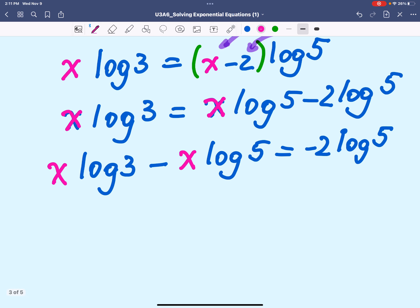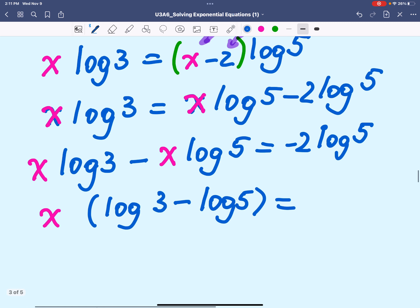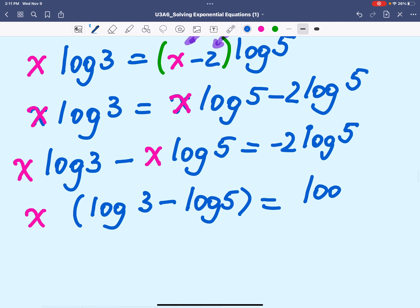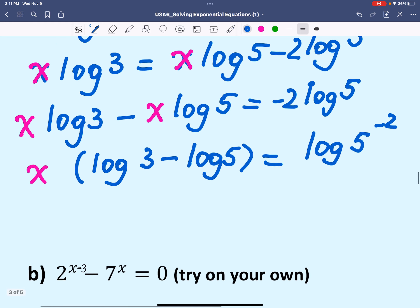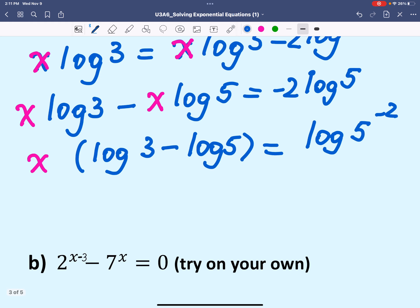We're trying to isolate x, and when coefficients are in log form, what we do is we factor x out. That means the coefficient will be in the form log 3 minus log 5. And that's negative 2 log 5, which, by the way, if you wish, you can rewrite as 5 to the power of negative 2. So we're trying to simplify the answer.